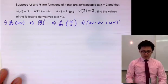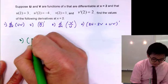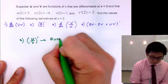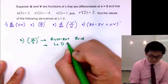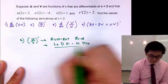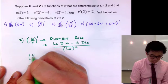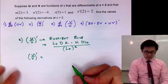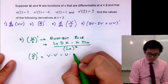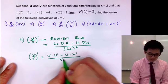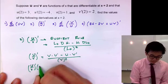Now for problem number 2, we're seeing fractions, so we know we're going to be using the quotient rule. To find (u/v)', we use the quotient rule: low d high minus high d low, all over low squared. Low means the denominator and high means the numerator. So to find (u/v)', it's v times u prime, minus u times v prime, all over v squared. We need to evaluate it at x equal to 2.